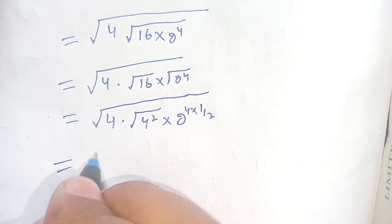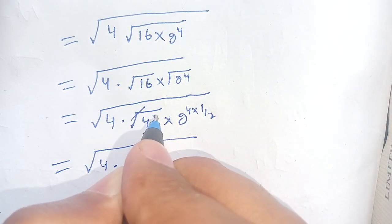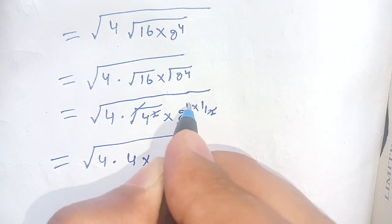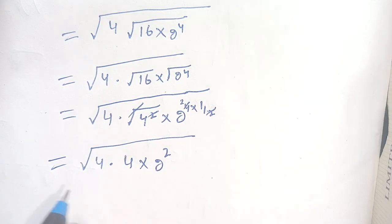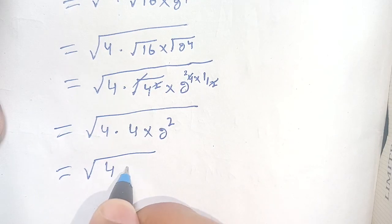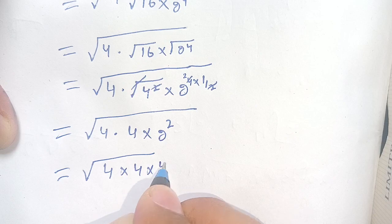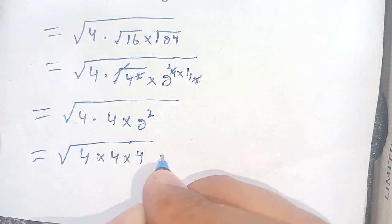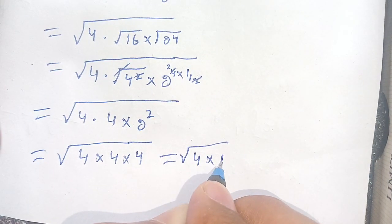The 4 divided by 2 gives us 2. Now we have square root of 16 times square root of 4 times square root of 16 times 2, and we get 4 times 2 times 2 with a remaining 2 power 2. In the next step we can write it as square root of 16 times 4 times 2 power 2, which becomes 4. Now we get square root of 4 times 4 times 4, which becomes 16.